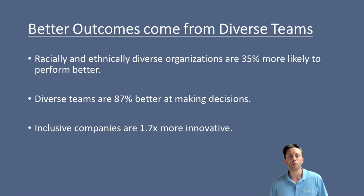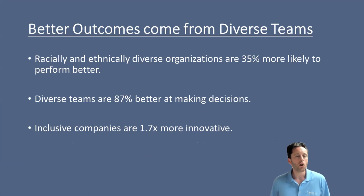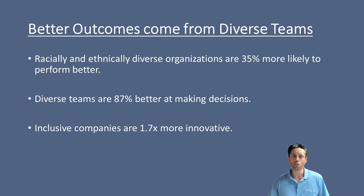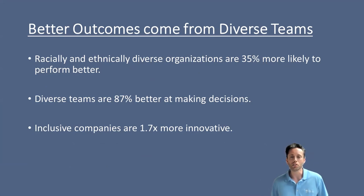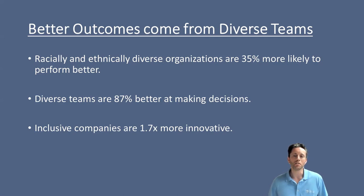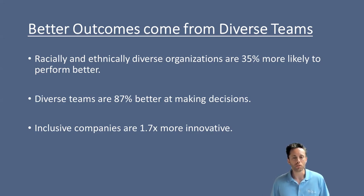Here are some simple stats from a number of different studies. Racially and ethnically diverse organizations actually perform better because they're able to work beyond just mimicking and replicating the same perspectives. Secondly, diverse teams are 87% better at making decisions, according to a study published in People Management, a UK journal. This was a study of over 600 business decisions made by 200 teams, and they found that diverse teams made more successful decisions more often than not.